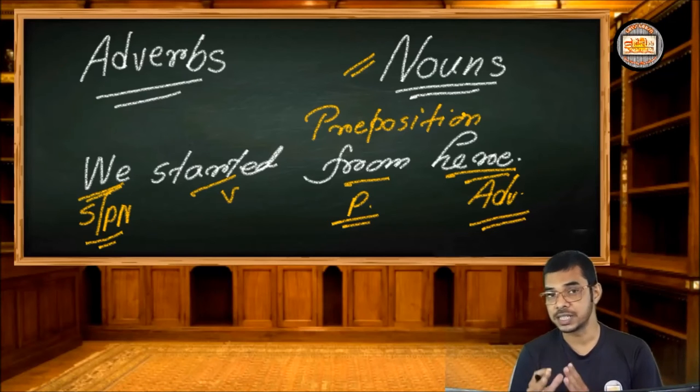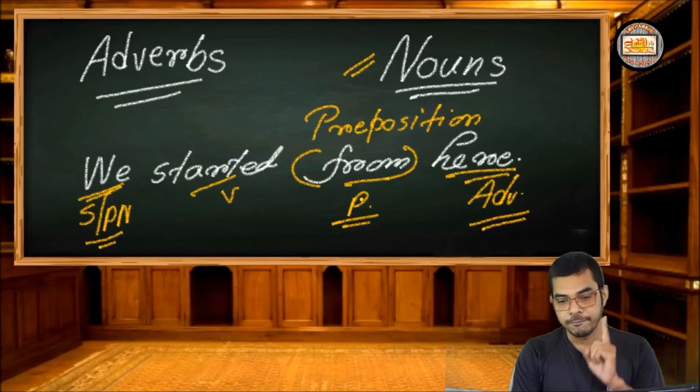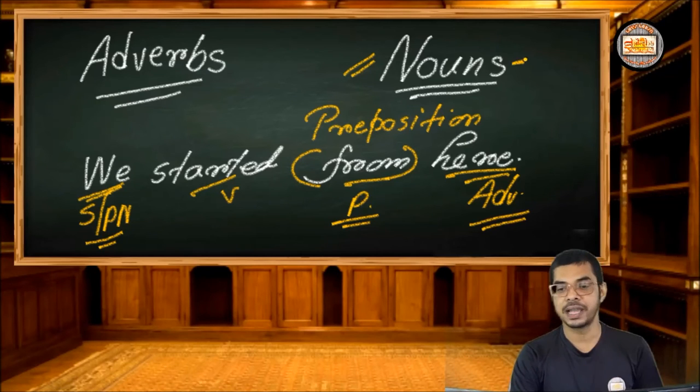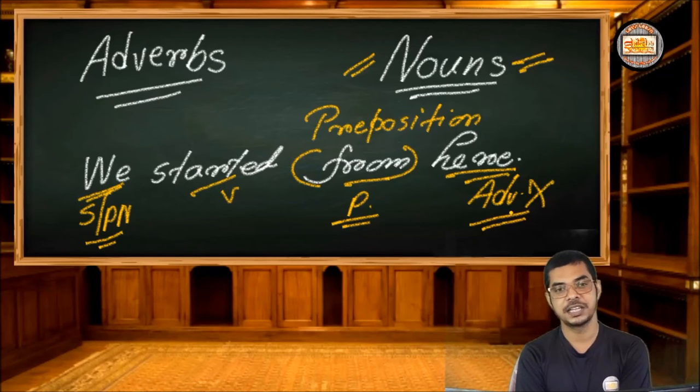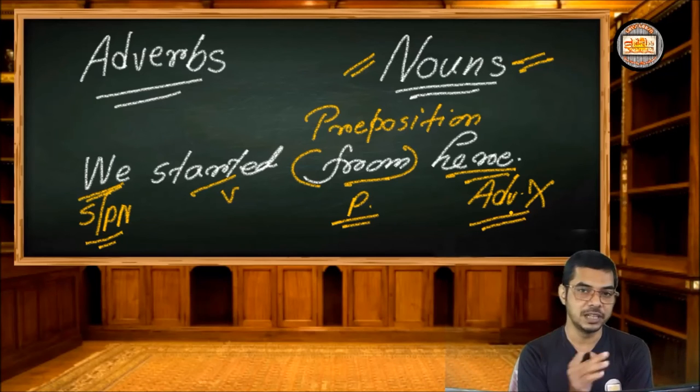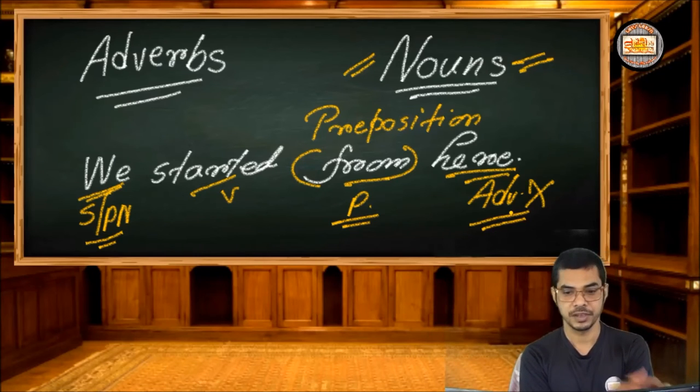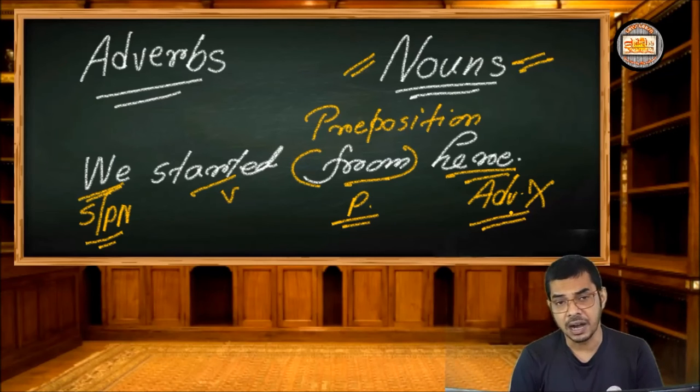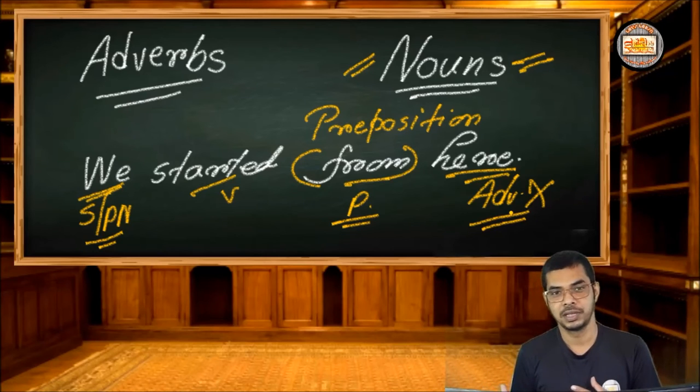So if there's a preposition used in a sentence like this one, like this from, obviously it must be followed by a noun and not by an adverb. Yes dear friends, that's why I have told you an adverb can be elusive. It's very difficult to find out whether an adverb is used adverbially or some other parts of speech. Here the adverb is used nominally.